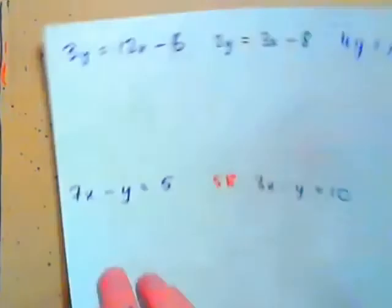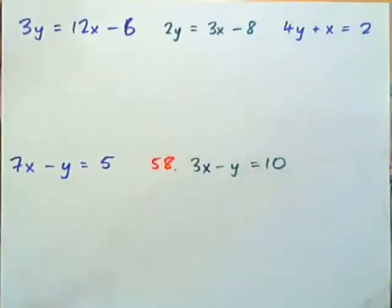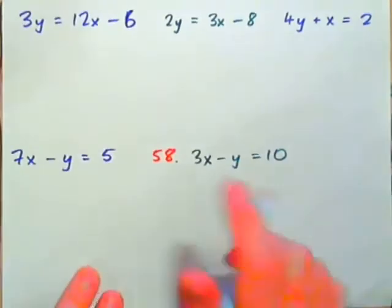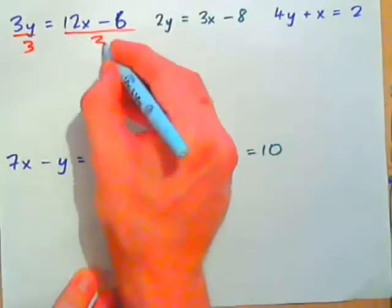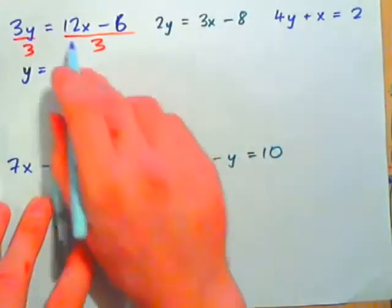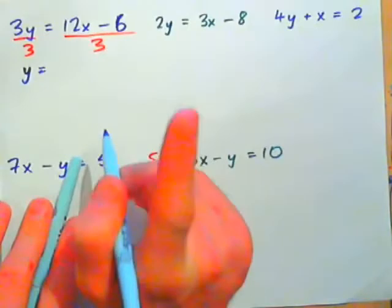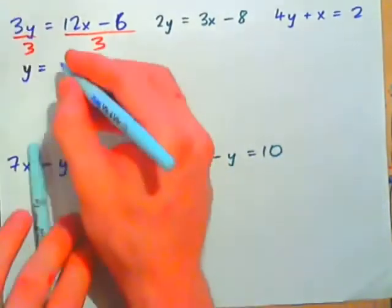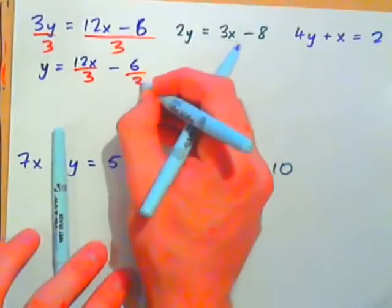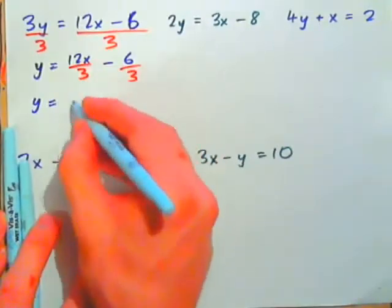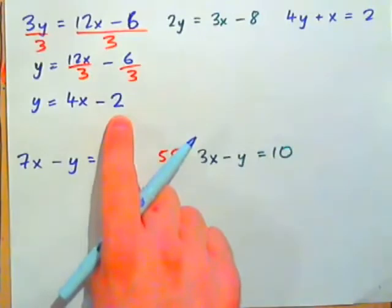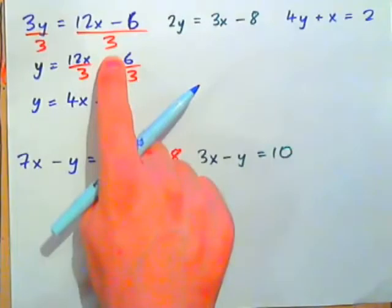Now let's look at what happens when Y has been multiplied by something. If we have 3Y equals 12X minus 6, to get Y by itself, divide by 3. Dividing both sides by 3 gives Y equals 12X minus 6 all over 3, which is the same as 12X over 3 minus 6 over 3. That simplifies to Y equals 4X minus 2.